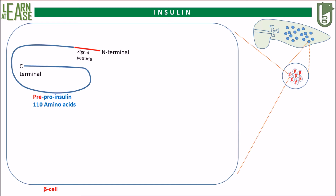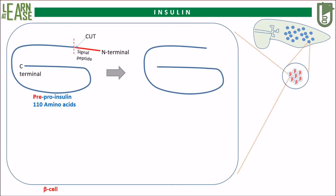Here, proteases will act on it to remove the signal peptide by cleaving the peptide bond. Also, the three disulfide linkages that are required are formed here. Once these modifications occur, it becomes pro-insulin.